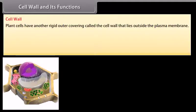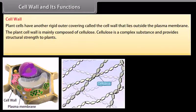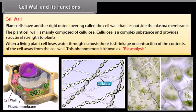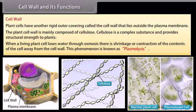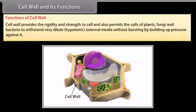Plant cells have another rigid outer covering called the cell wall, which lies outside the plasma membrane. The plant cell wall is mainly composed of cellulose, a complex substance that provides structural strength to plants. When a living plant cell loses water through osmosis, there is shrinkage or contraction of the contents of the cell away from the cell wall — this phenomenon is known as plasmolysis. The cell wall provides rigidity and strength and also permits cells of plants, fungi, and bacteria to withstand very dilute hypotonic external media without bursting.